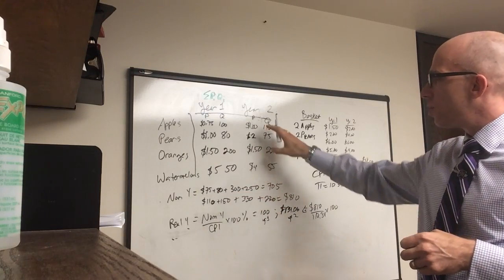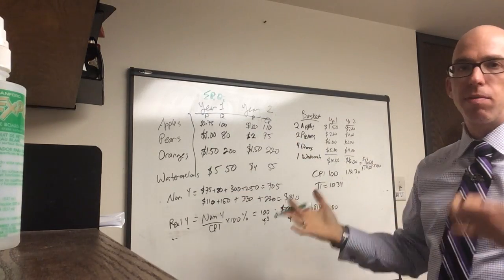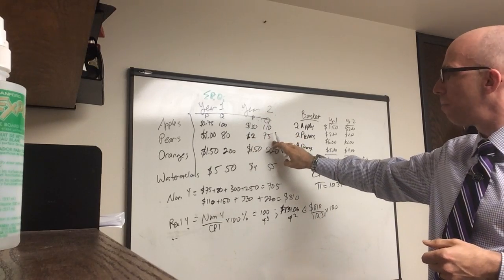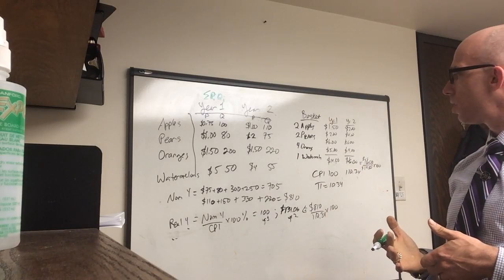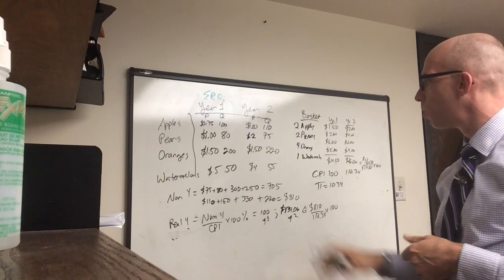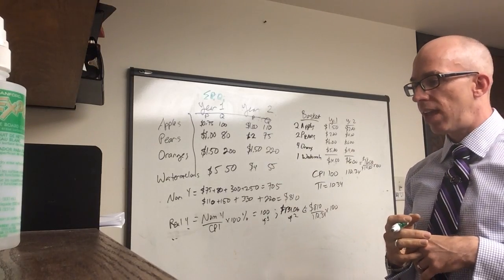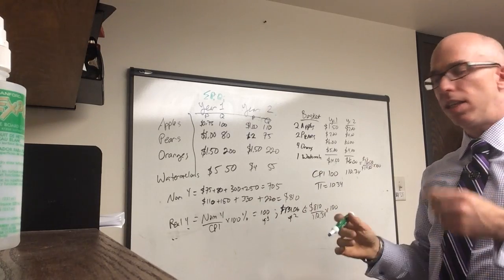Now, these are the four components. We can do it the next year, and we can see that we actually have some fruit we have more, some fruit we have less. But overall, spending goes up. We have $110 of apples, $150 of pears, $330 worth of oranges because it's 1.5 times 220, and 220 worth of watermelons. We actually have $810 worth of GDP.